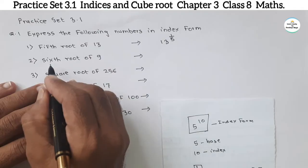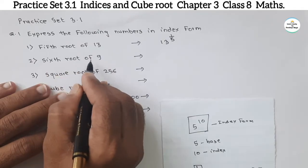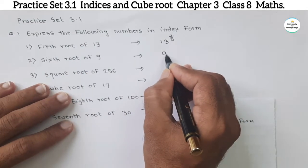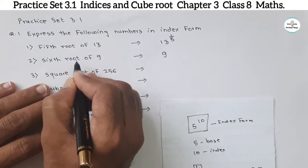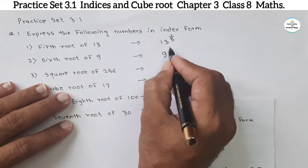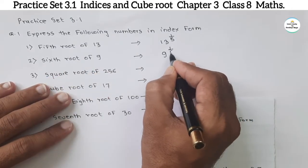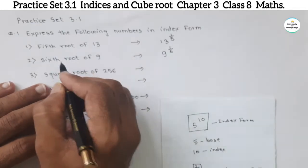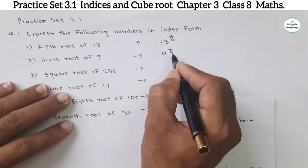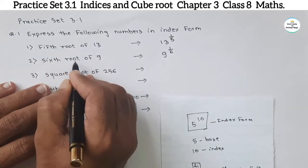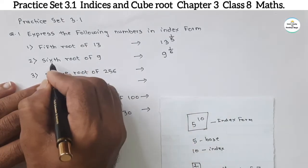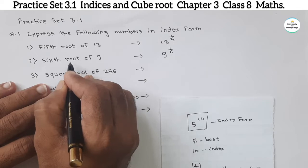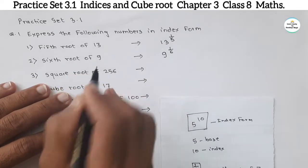Similarly, the next one: sixth root of 9. Here, 9 is the base number. Sixth root means the power is 1 by 6. When it is said to be a root, it is 1 by n. So the index form is 9 raised to 1 by 6.